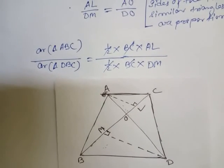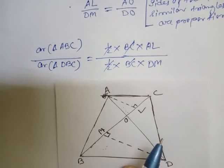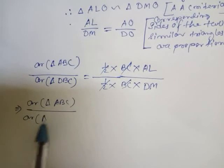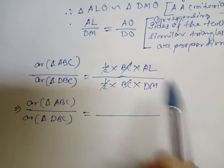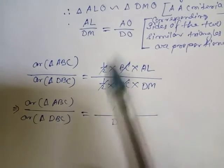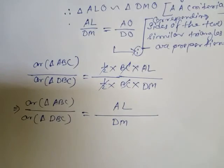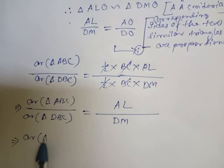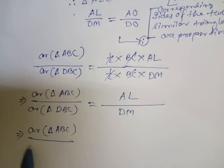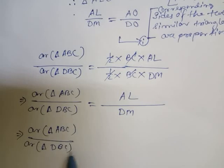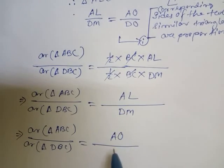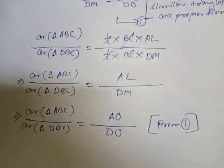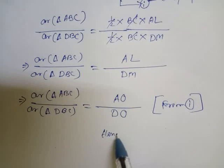So we can write: area of triangle ABC divided by area of triangle DBC equals AL/DM — call this equation (1). And from the similarity result, AL/DM equals AO/DO. Therefore, area of triangle ABC divided by area of triangle DBC equals AO/DO. From (1) and the similarity result — hence proved.